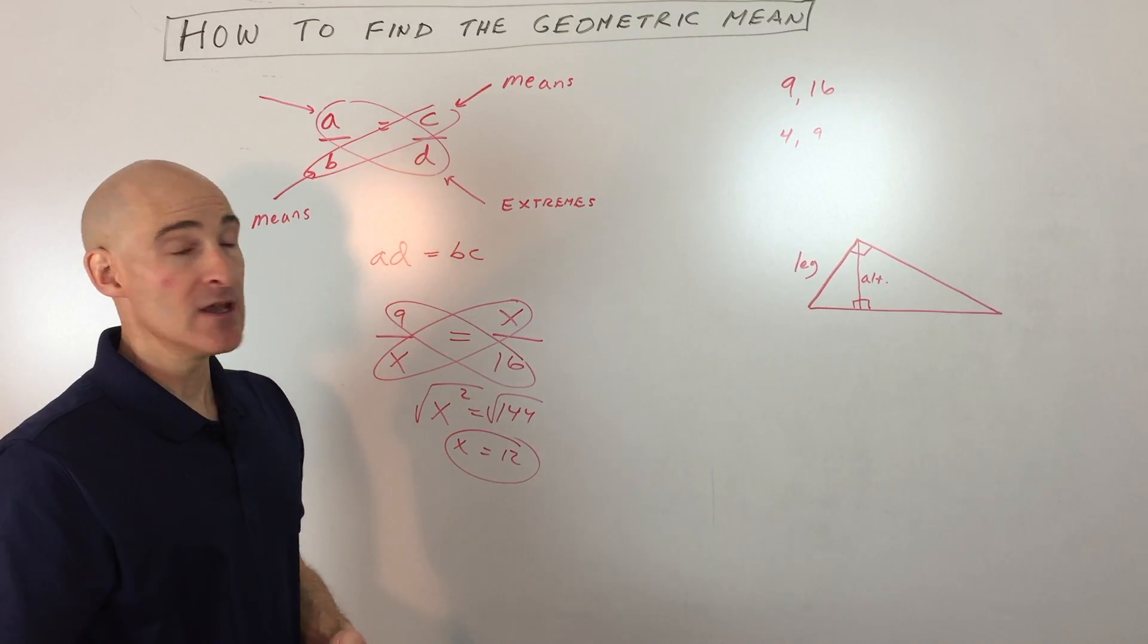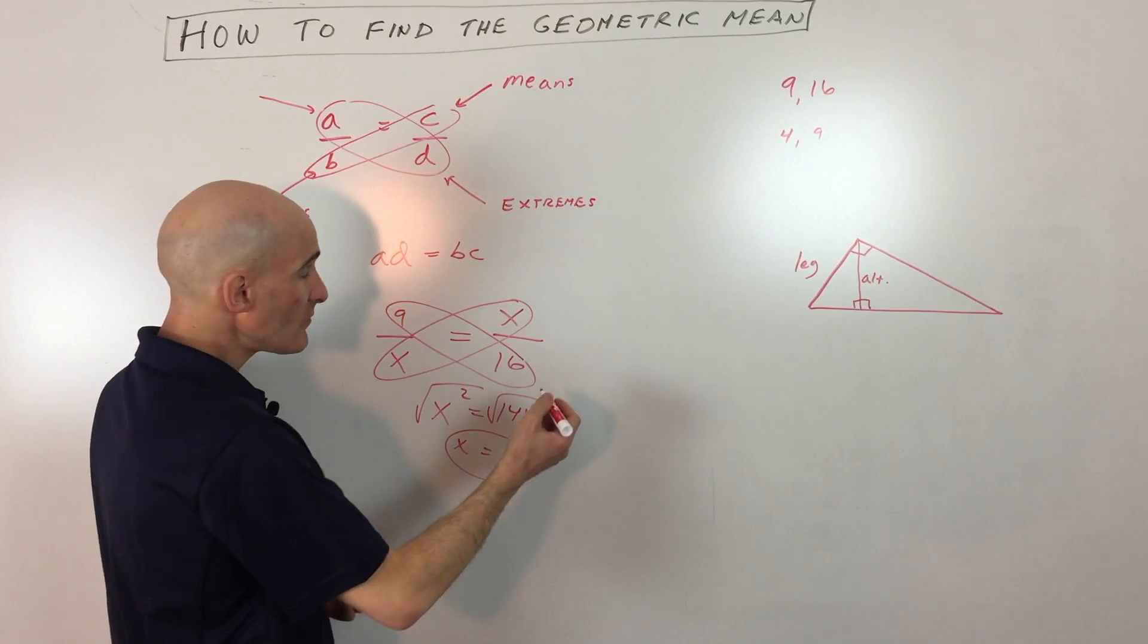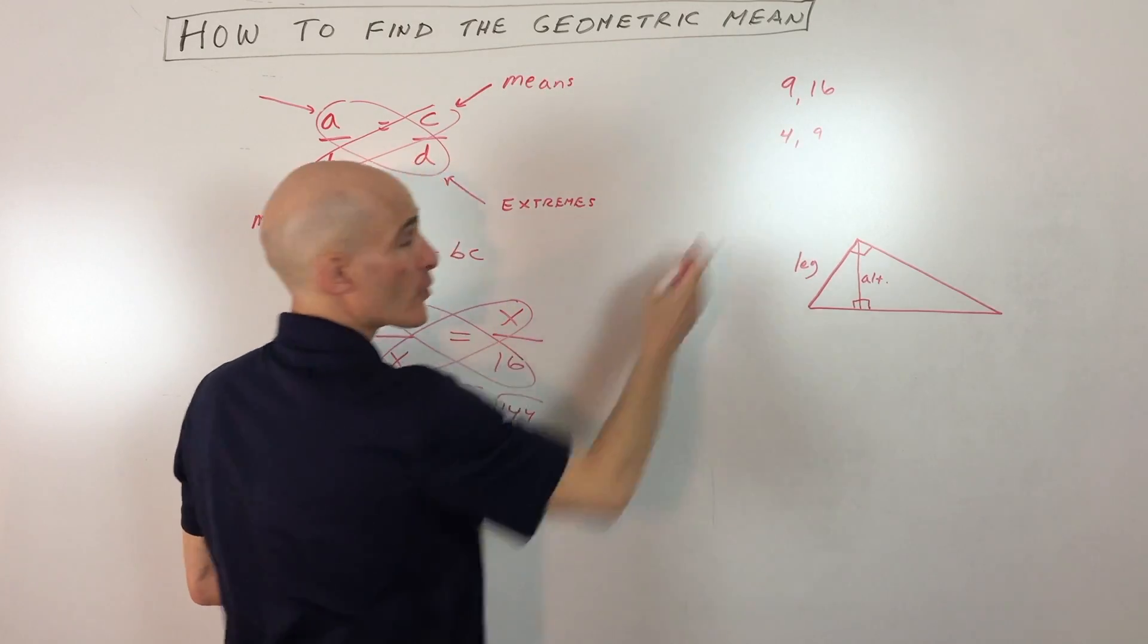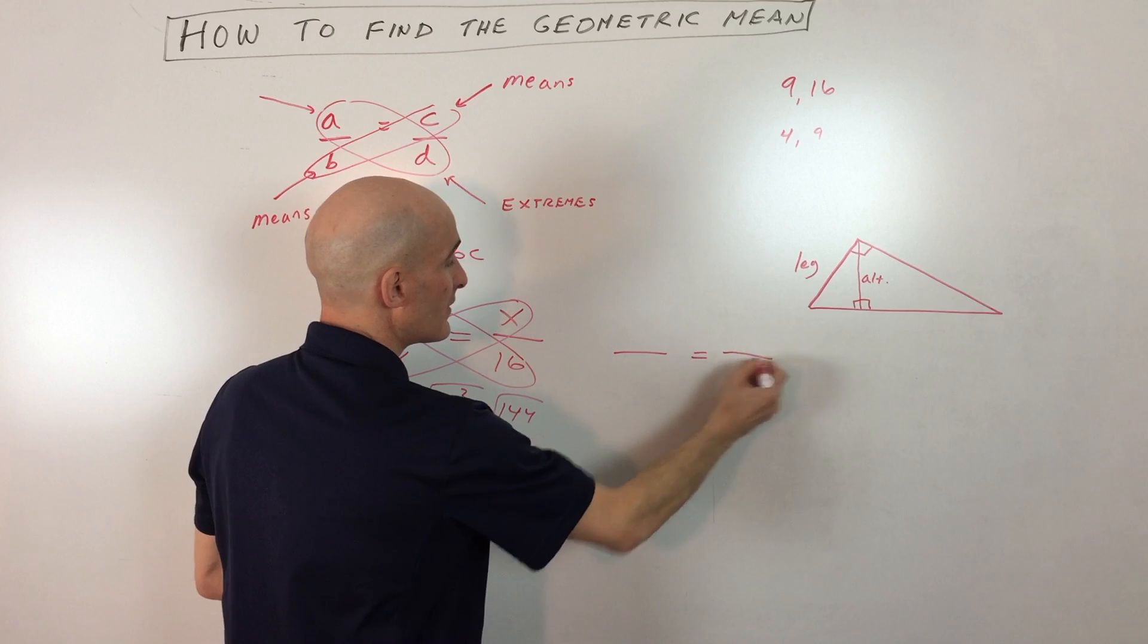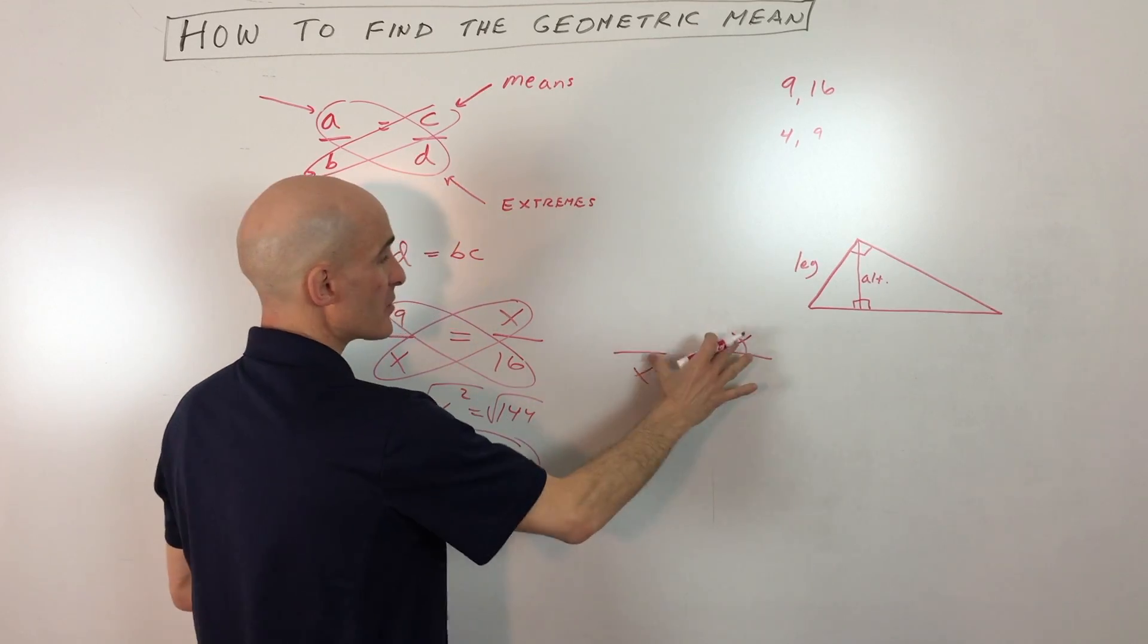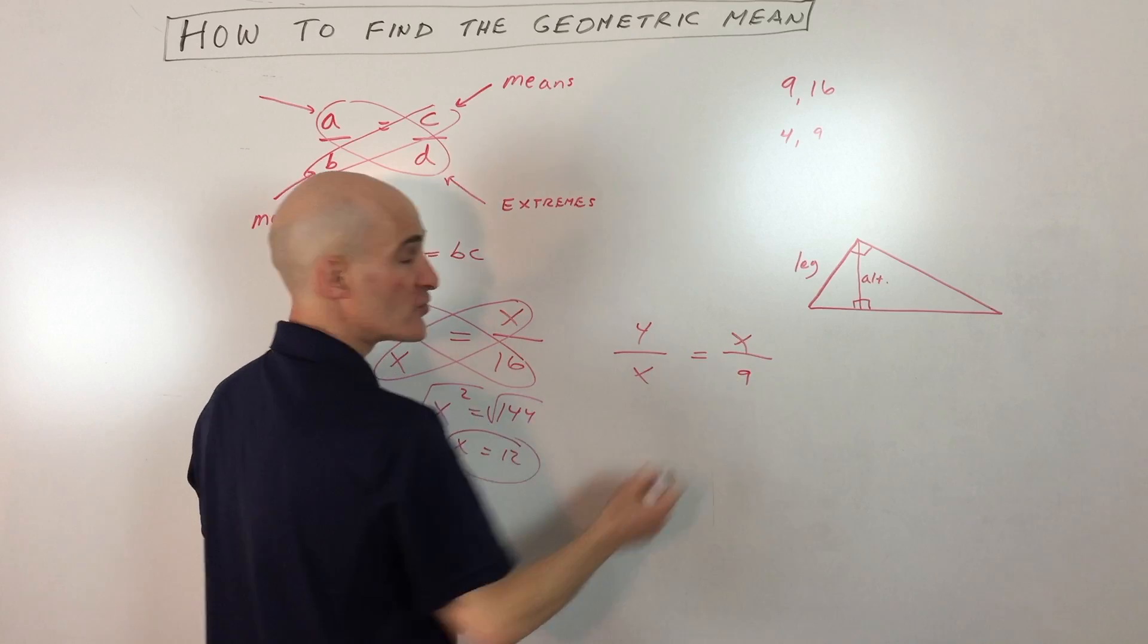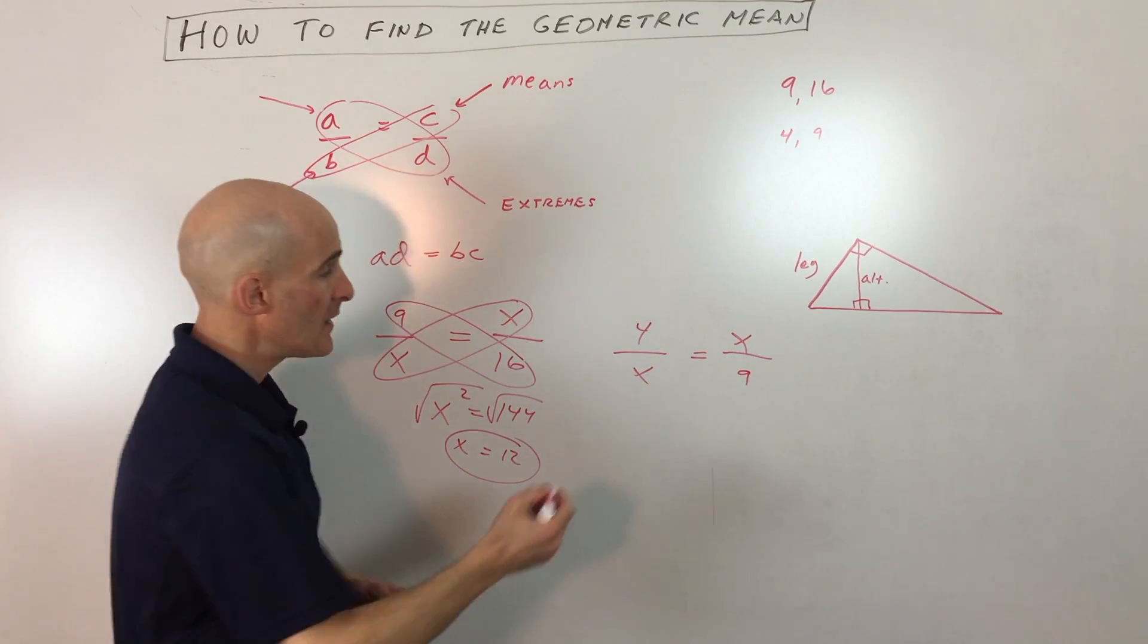So another example would be, like, say for example if you had 4 and 9. So let's see if we can do that one. Same idea: we've got our means here, these are means, those are extremes here. We're gonna put 4 and 9, our two numbers that we're interested in working with, and we're gonna cross-multiply.